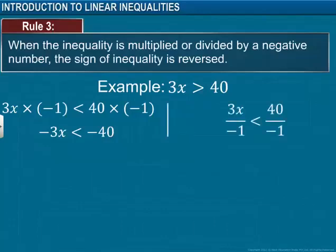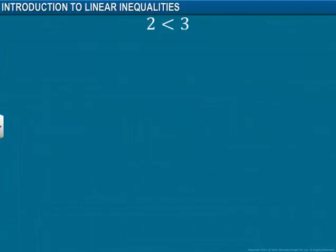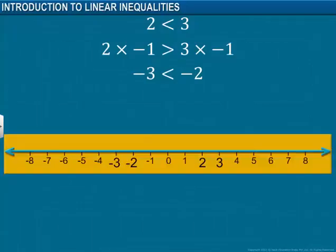The intuition can be understood with the help of the real line. We know that 2 is less than 3. Let's multiply both sides by minus 1. We change the signs since we are multiplying by a negative number. If we observe the numbers on the real line, minus 3 is less than minus 2. That is why we change signs when we multiply by a negative number.